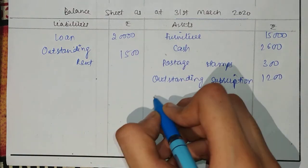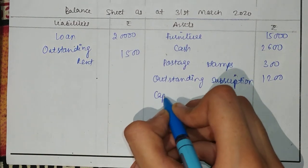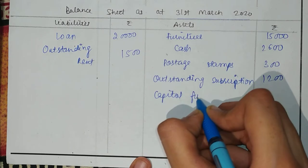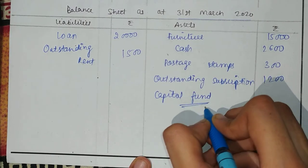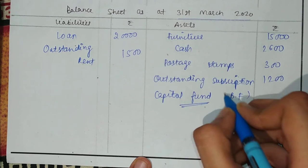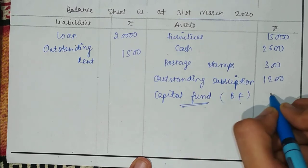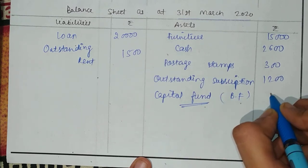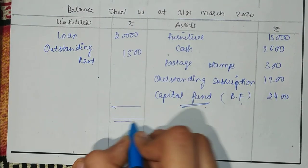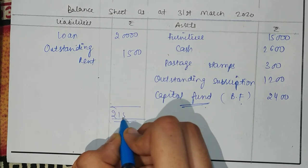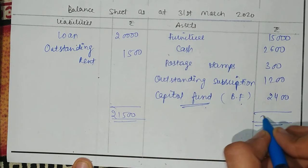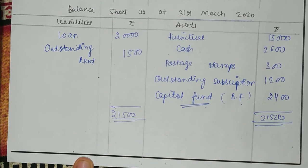In this case, the capital fund is on the liability side. Since this year we have a deficit, the balancing figure is $2,400. The total of the opening balance sheet comes to $21,500 on both sides.